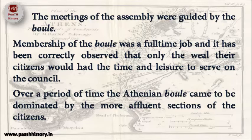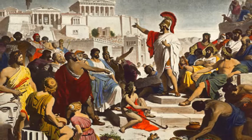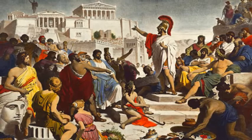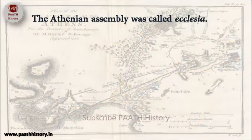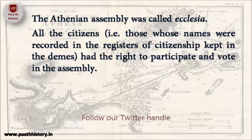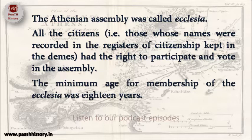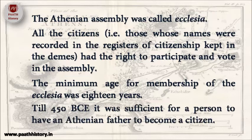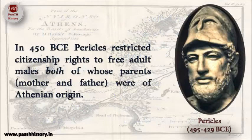By circa 450 BCE, when Pericles became the dominant figure in Athenian politics, there was definitely an attempt to restrict the access of the lower classes to political power. The Athenian assembly was called Ecclesia. All citizens whose names were recorded in the registers of citizenship kept in the Demes had the right to participate and vote in the assembly. The minimum age for membership of the Ecclesia was 18 years. Till 450 BCE, it was sufficient for a person to have an Athenian father to become a citizen. In 450 BCE, Pericles restricted citizenship rights to free adult males both of whose parents — mother and father — were of Athenian origin.